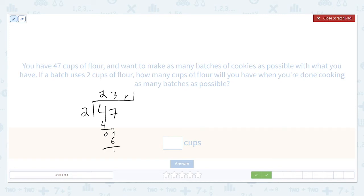Notice that when we do these problems, the quotient, the 23, doesn't matter at all. All we care about is the remainder, which in this case is one.